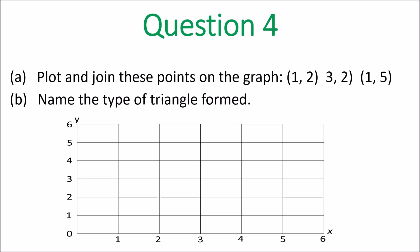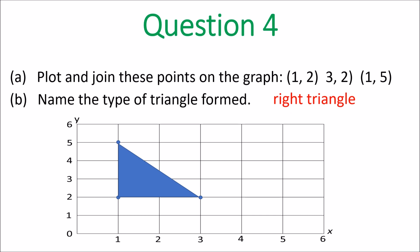Question four: plot and join these points on the graph. Look on the x-axis first — so you have point (1,2), then (3,2), then (1,5). Draw your triangle. And what type of triangle is it? A right triangle, or right-angle triangle.